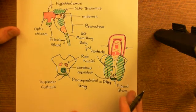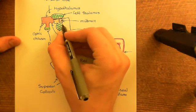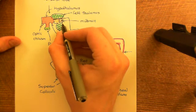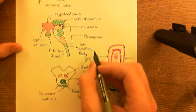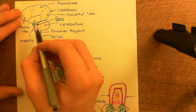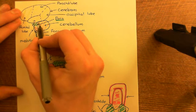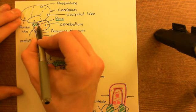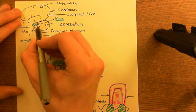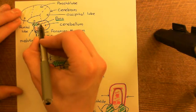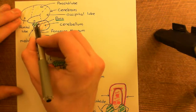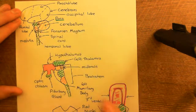So the fourth ventricle — to outline where its position is going to be — it's going to be behind the pons and the medulla and in front of the cerebellum. There is a hollowing between the front of the cerebellum and the back of the pons and the medulla, and this is going to be the fourth ventricle.